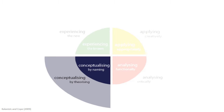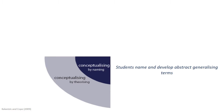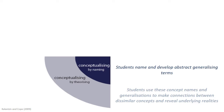Conceptualising is a process which moves away from life-world experiences and instead looks at underlying structures, causes and relationships. Conceptualising by naming involves students naming and developing abstract generalising terms. By the process of conceptualising by theory, students use these concept names and generalisations to make connections between dissimilar concepts and reveal underlying realities which may not immediately be obvious.